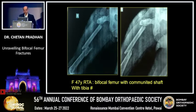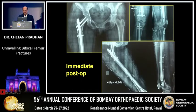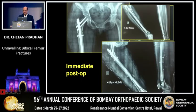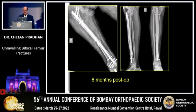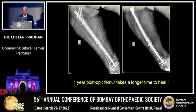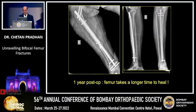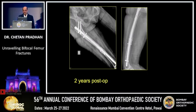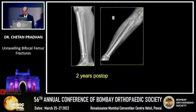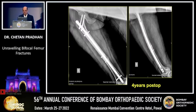Example: a bifocal femur with a comminuted shaft and a tibia fracture in a young female — this is the immediate post-op. At six months post-op, the tibia is healing but the femur shaft is showing a delayed union. At one year post-op, the femur still takes longer to heal, but at two years it has healed. The tibia has obviously healed, and at four years post-op, everything has healed.